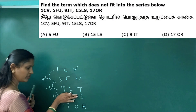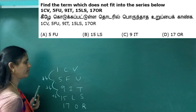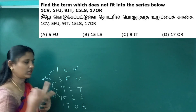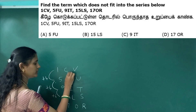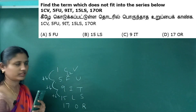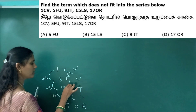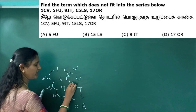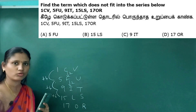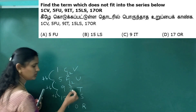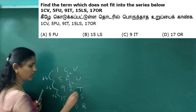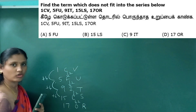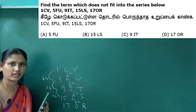So first let's look at the pattern. C, D, E, F — that's plus 4. Then T is plus 4. Now look at the letters: I, J, K — that's 2 letters skipped. M, N — 2 letters skipped. You can see that all numbers follow this pattern.